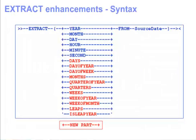Here is the syntax diagram for the extract function. The 11 additional new choices for extraction of date-time values are shown in red. They are: days, day of year, day of week, months, quarter of year, quarters, weeks, week of year, week of month, leaps, and is-leap year.